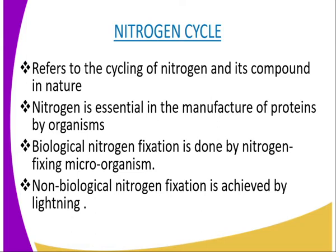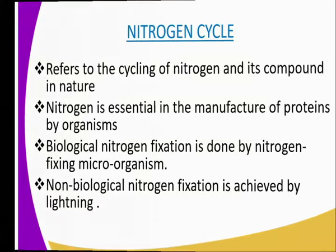It is therefore necessary that the free atmospheric nitrogen is converted into a form that can be utilized by plants through the process called nitrogen fixation. Biological nitrogen fixation is done by nitrogen-fixing microorganisms. These microorganisms include the Rhizobium of the root nodules of legumes. They convert nitrogen gas into ammonia, and this explains how the process happens from nitrogen to nitrate until it is absorbed by the plant.